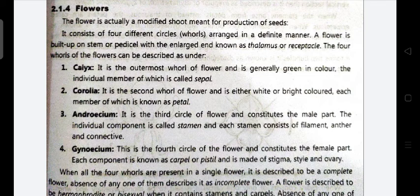The flower consists of four basic whorls, which are arranged in a definite manner. The flower is built up on a stem — it is built upon a pedicel, with the enlarged end of the pedicel known as the thalamus.